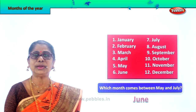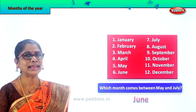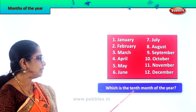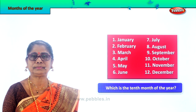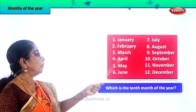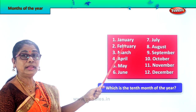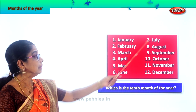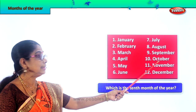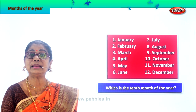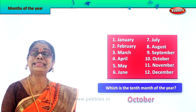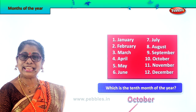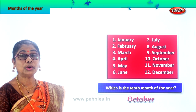Did you enjoy the exercise? Let's take another question. Which is the tenth month of the year? Tenth month — January 1st, 2nd, 3rd, 4th, 5th, 6th, 7th, 8th, 9th — the 10th month of the year is October. October is the tenth month of the year. Spell October — O-C-T-O-B-E-R, October.